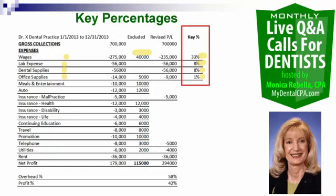These percentages are not optimal — this is not where the doctor should be. There's even more money that should be coming to the doctor if they're really looking at their staff, their supplies, and managing the overhead of their practice. The 58% overhead is pretty good — really only off by about 3% from optimal. So he's still doing well but could do better.